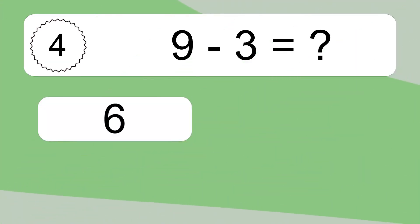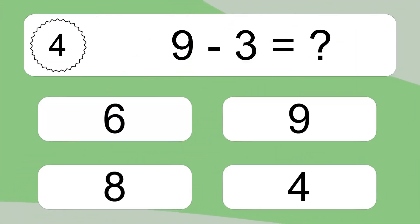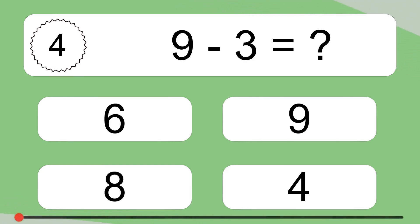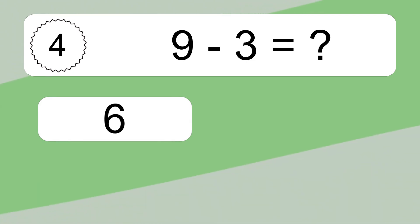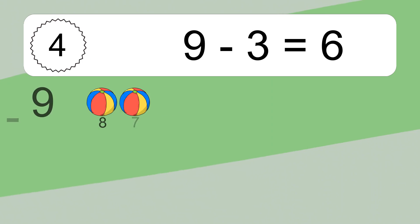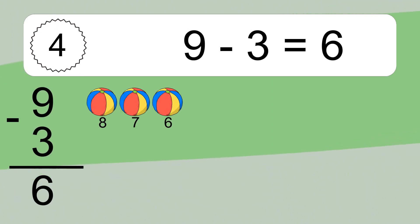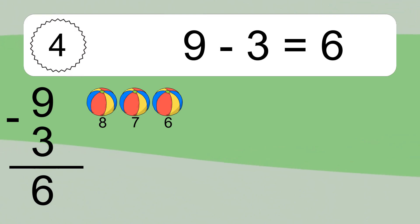9 minus 3 equals what? 9 minus 3 equals 6. Let's count it: 8, 7, 6.